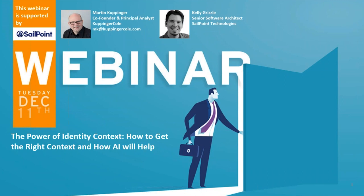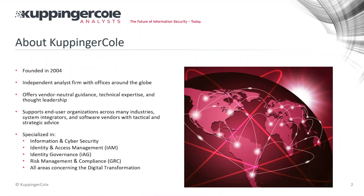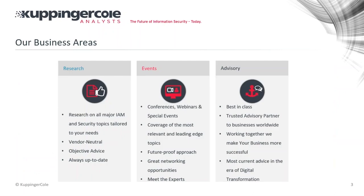Before we start with the webinar, some quick information about the flow and some background about Kuppinger Cole. Kuppinger Cole is an international analyst company — independent, headquartered in Germany, with offices also in Singapore and Seattle. We focus on information and cyber security, identity and access management, and governance, risk and compliance, and a lot of other things around digital transformation.